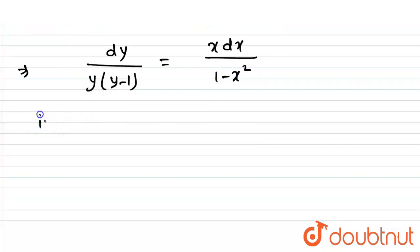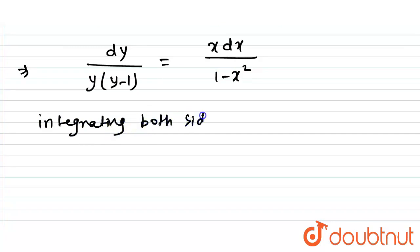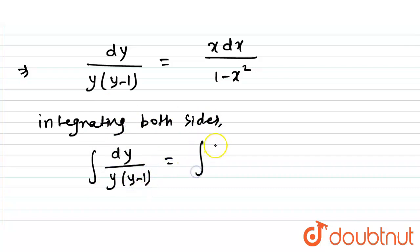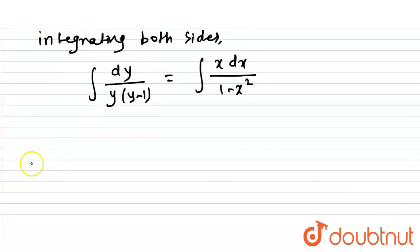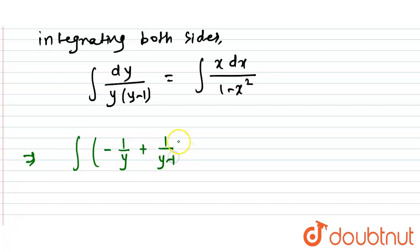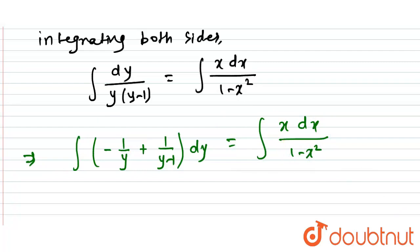Now integrating both sides: the integral of dy / [y(y - 1)] equals the integral of x dx / (1 - x²). We can use partial fractions to break 1 / [y(y - 1)] as (-1/y) + (1/(y - 1)), so the left side becomes the integral of [(-1/y) + (1/(y - 1))] dy.